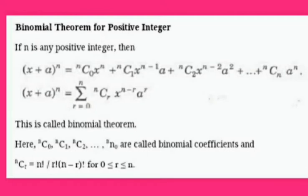The coefficients nc0, nc1, nc2, etc., ncn are called binomial coefficients. They are also written in the form c0, c1, c2, etc., cn, where ncr is n factorial divided by r factorial into n minus r factorial, for 0 less than or equal to r less than or equal to n.